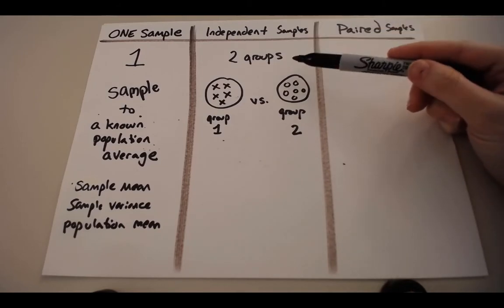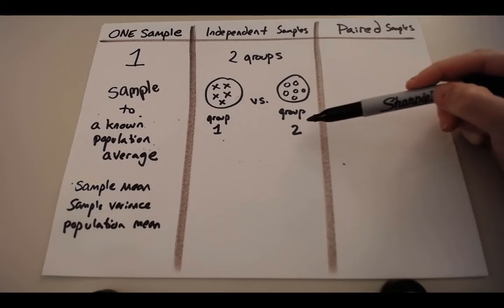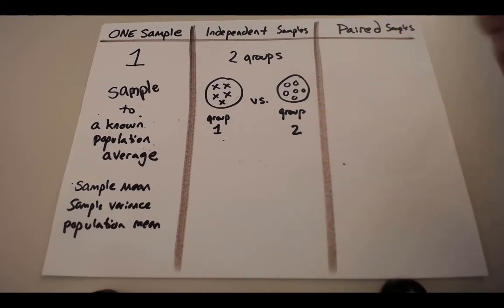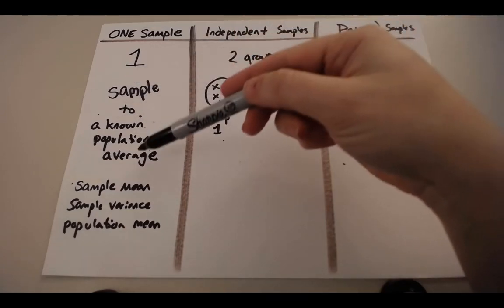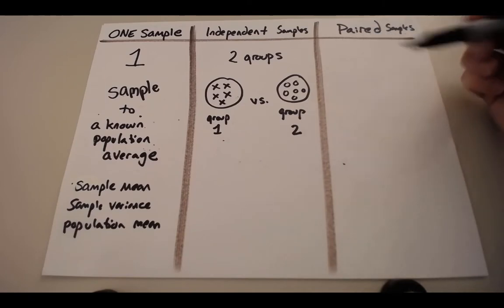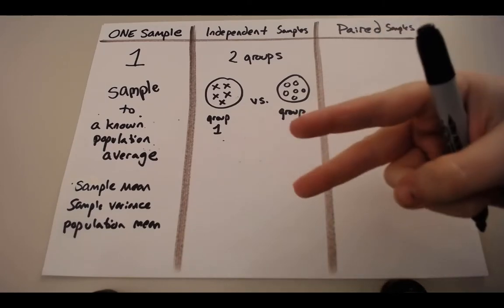An independent-sample t-test has two groups, group one and group two, because a t-test usually means two things. Either one sample to a population, that's two things, two groups, that's two things, or paired-sample t-test, which is two measurement points, two things.